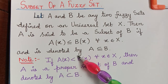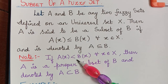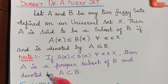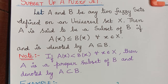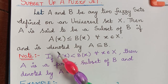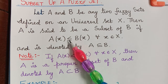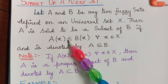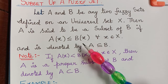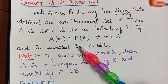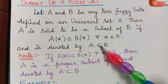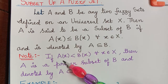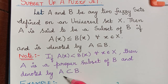If the membership grade of X in A is strictly lesser than the membership grade of X in B for all X element of capital X, then A is said to be a proper subset of B, denoted by A proper subset of B. So whenever A(X) is strictly lesser than B(X), it is strictly a proper subset of B.